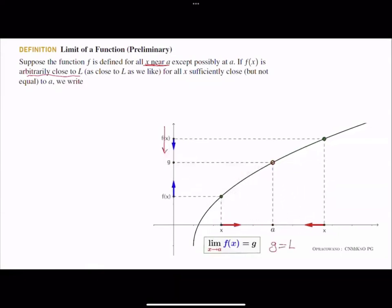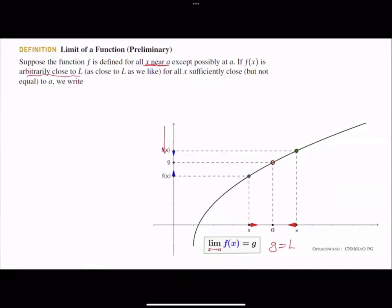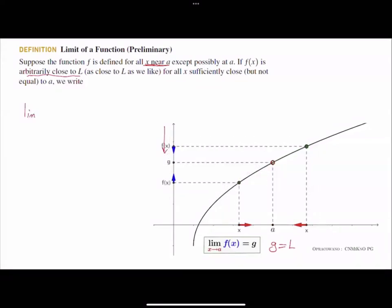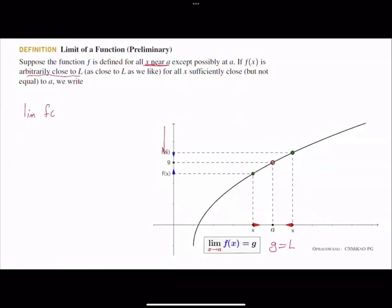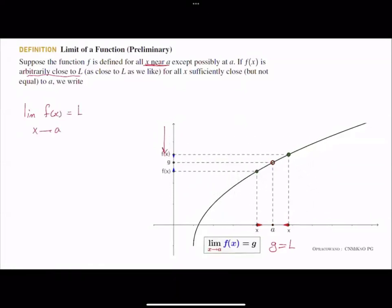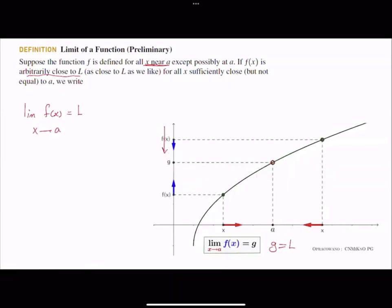We have different representations and different notations. You can write it this way: the limit of f(x) as x approaches a is equal to l, or equal to g.